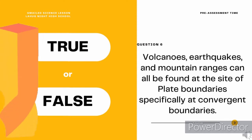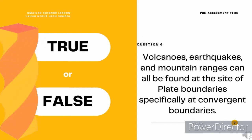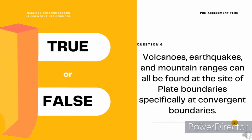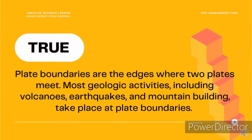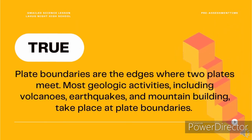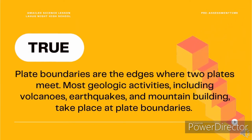True or false? Question 6. Volcanoes, earthquakes, and mountain ranges can all be found at the site of plate boundaries, specifically at convergent boundaries. True or false? The correct answer is true! Plate boundaries are the edges where two plates meet. Most geologic activities, including volcanoes, earthquakes, and mountain building, take place at plate boundaries.